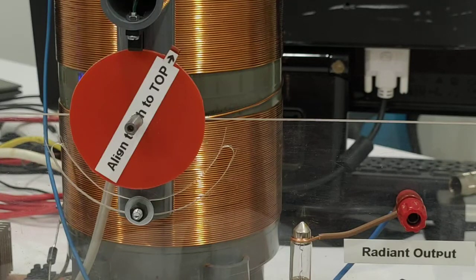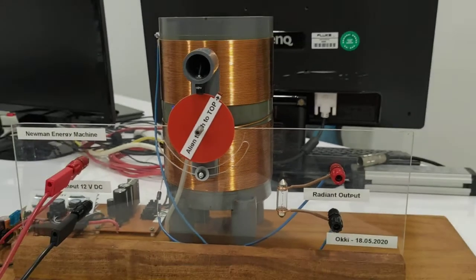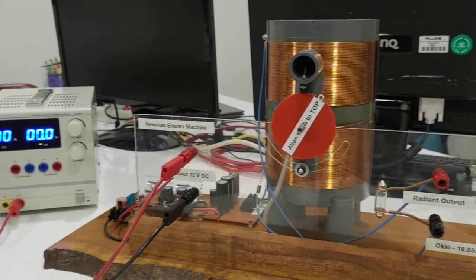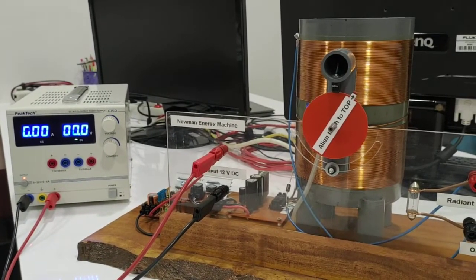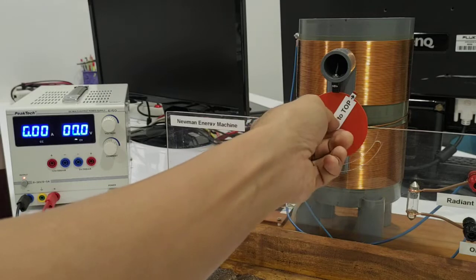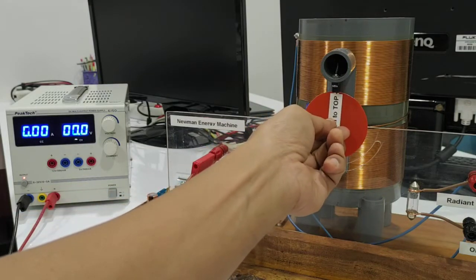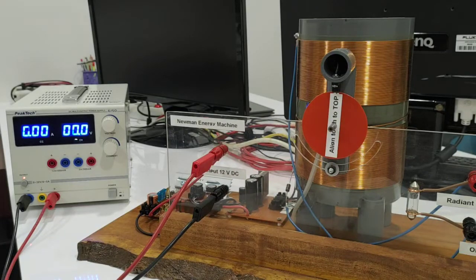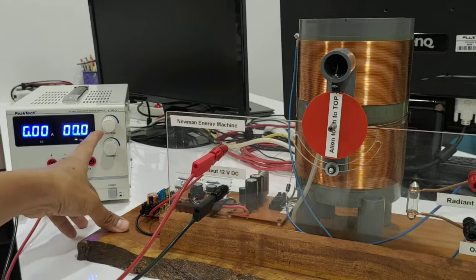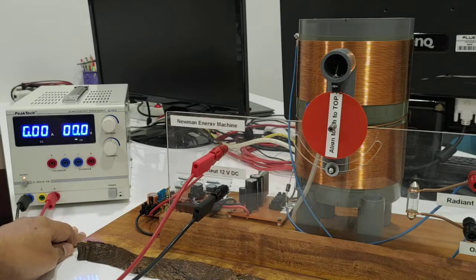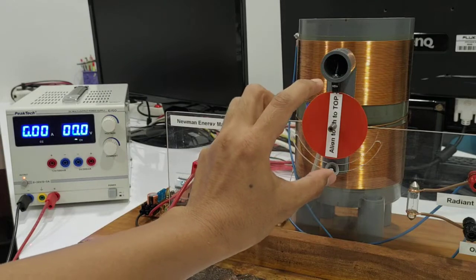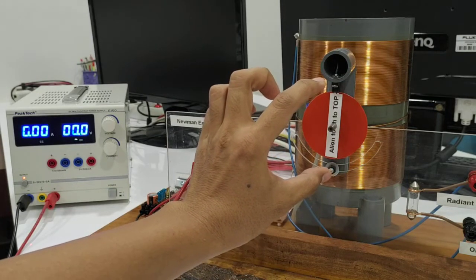Now I'm going to turn the power supply on and I will put the tooth exactly at the center of the sensor and slowly adjust the voltage. And you can see that at the certain voltage, the rotor will be kicked away from the sensor.